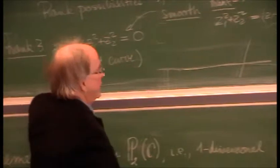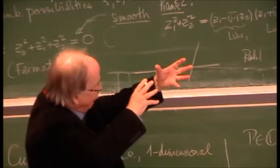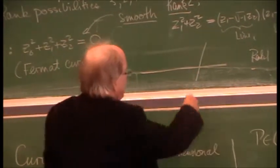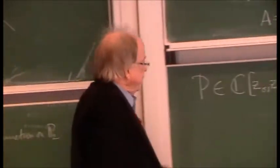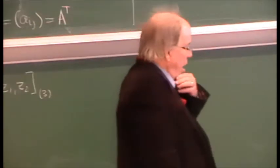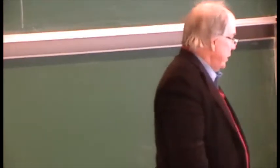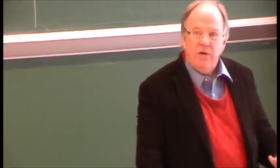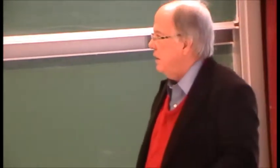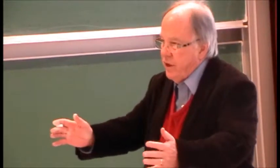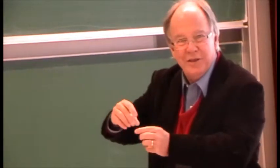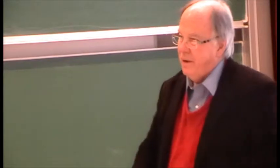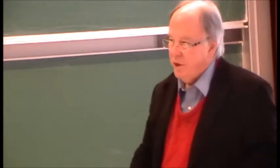Rank one is when these lines are the same, so it's a double line — a line with multiplicity two. We already see multiplicity is going to play a role. You can physically see things moving as a sphere degenerating, coming in and degenerating to two lines and so on.